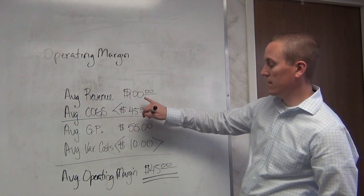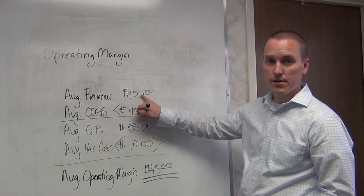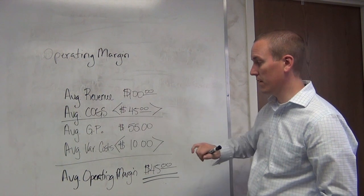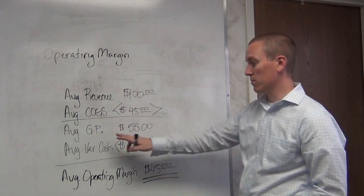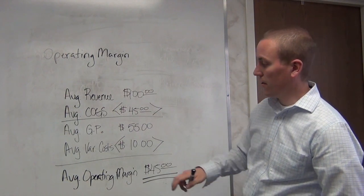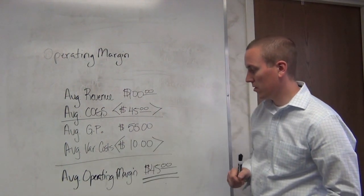55 divided into 100 is 0.55 or 55%. So your gross profit margin is 55%. Your average variable cost in this example, I used $10.